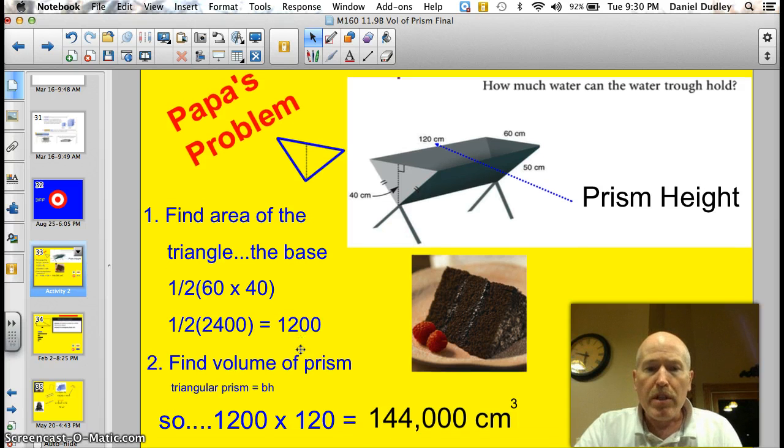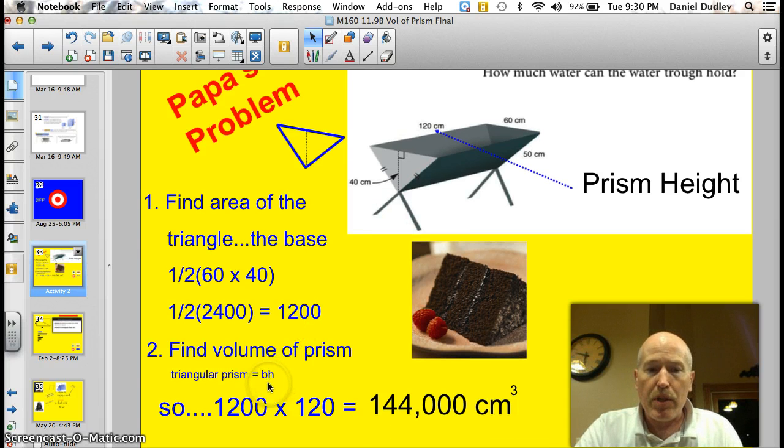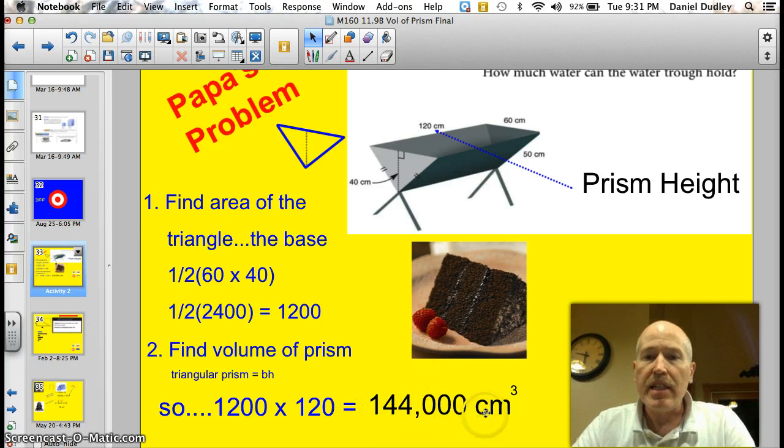Now, I'm ready for step two. Step two, you find the volume of the prism by just multiplying the base times the height. Well, here's my base, 1200 times the height, the prism height. It shows it right here. It's 120 centimeters long, so times 120. So, a basic factor is 12 times 12, which is 144. And then, of course, I have three zeros, so it would be 144,000 centimeters cubed because we have three measurements there.